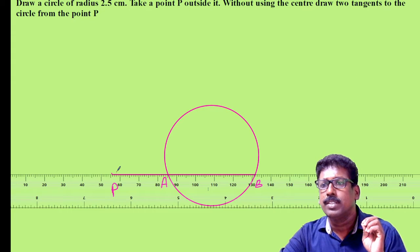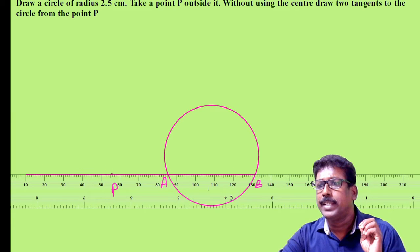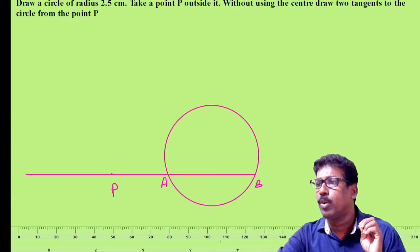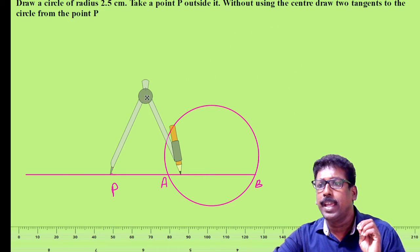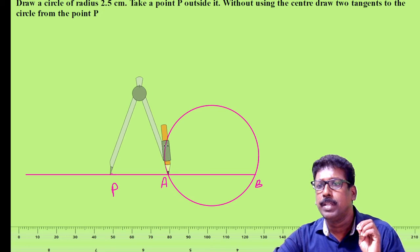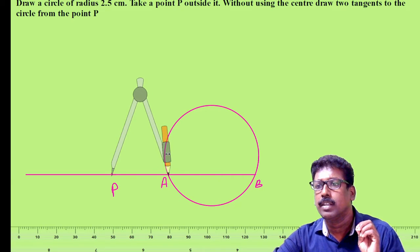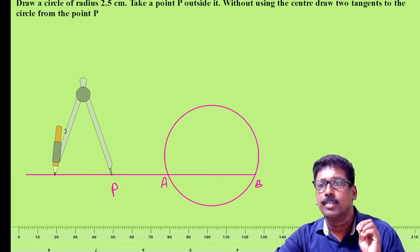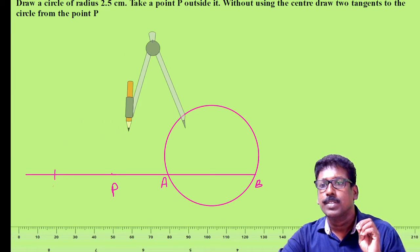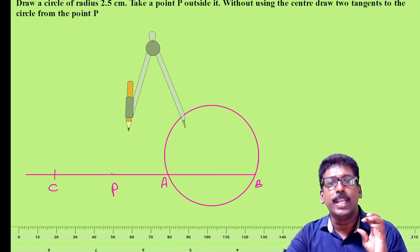Now what you have to do is produce BP and take a point C on it such that PA is equal to PB. Now take point C in this way — so this point will be C, that is PA is equal to PC.